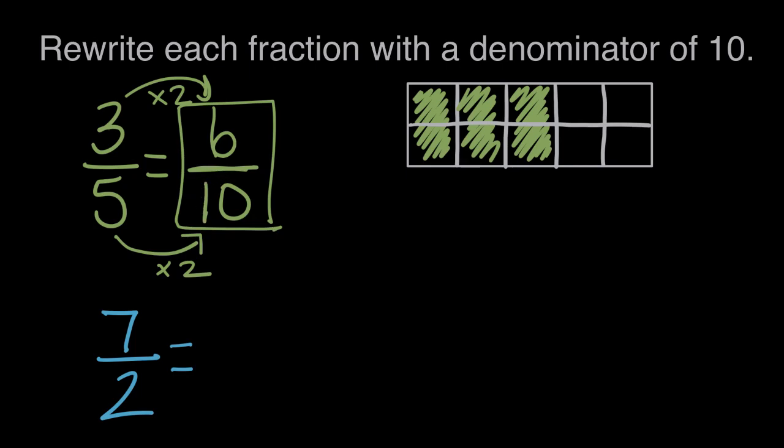We just changed the denominator and wrote it a different way. So three-fifths can be rewritten in tenths as six-tenths.